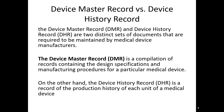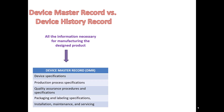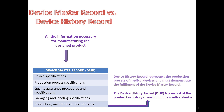Let's take a moment to recap the difference between a device master record and a device history record. The DMR and DHR are two distinct sets of documents — it's important to remember that — required to be maintained by medical device manufacturers. The DMR, the device master record, is a compilation of records containing the design specifications and manufacturing procedures for a particular device. On the other hand, the DHR is a record of the production history of each unit. All the information necessary for manufacturing the product is found in the DMR, and out of that comes the DHR.